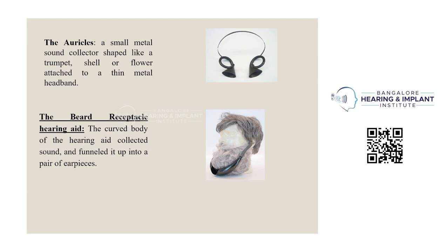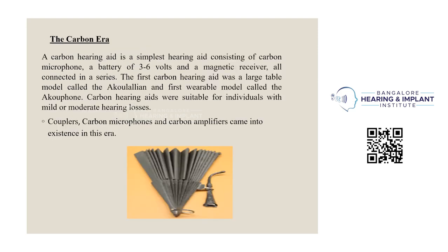The carbon era hearing aid is the simplest, consisting of a carbon microphone, a battery of three to six volts, and a magnetic receiver, all connected in series. The first carbon hearing aid was a large table model called the Acousticon, and the first wearable model was called the Acuphone. Carbon hearing aids were suitable for individuals with mild to moderate hearing losses. Duplex carbon microphones and carbon interfaces also came into existence in this era.